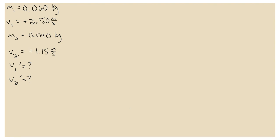The unknowns are V1' and V2'. This is a perfectly elastic collision, so kinetic energy and momentum are both conserved. That's fine, because we have two equations to solve for those two unknowns. Pause this video and solve the whole thing. When you have an answer for V1' and V2', hit play and we'll go over it.